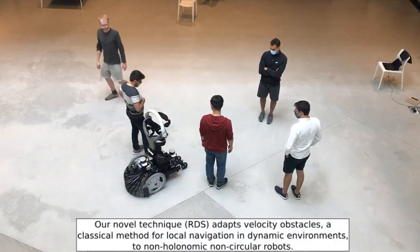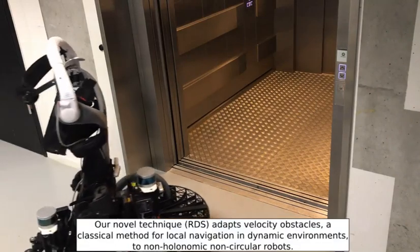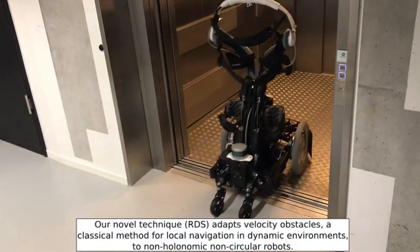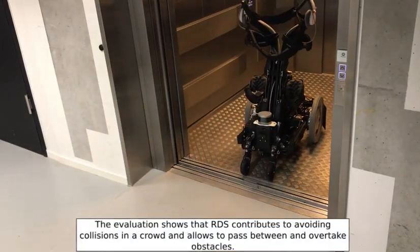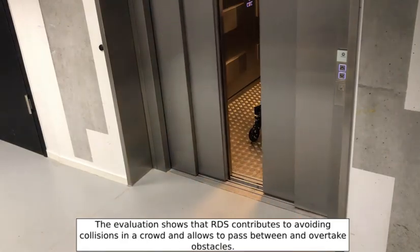Our novel technique, RDS, adapts velocity obstacles, a classical method for local navigation in dynamic environments, to non-holonomic, non-circular robots. The evaluation shows that RDS contributes to avoiding collisions in a crowd and allows to pass between and overtake obstacles.